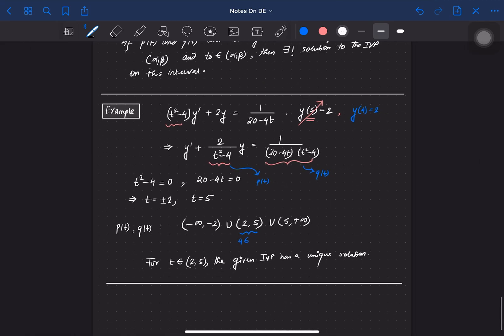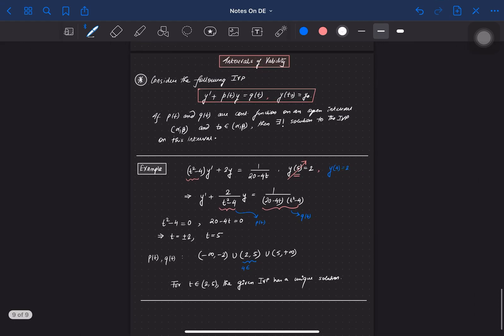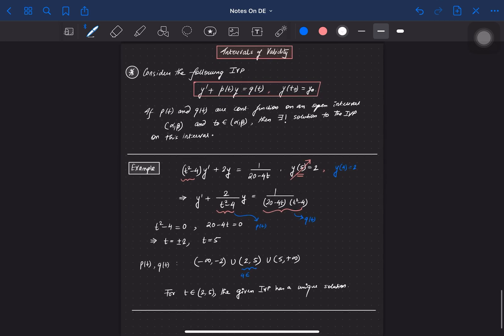Let's go back and see the theory once more. If you have an IVP of this form, and p(t) and q(t) are continuous functions on an open interval (α, β), and the initial condition where it is defined belongs to that interval, then there exists a unique solution to the IVP. Thank you.